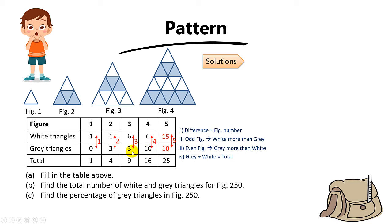You can also spot another pattern: the grey triangles repeat themselves, and the white triangles also repeat themselves. So the grey for figure 5 should be 10 because of this repetition. Then to find the white, simply do 25 minus 10 to get 15. That's another way of solving this question.